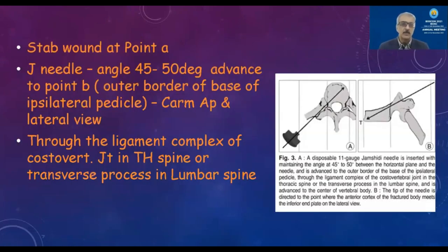Make a stab wound at point A. The cannula needle is angled at 45 to 50 degrees and advanced to point B, which is the outer border of the base of the respective pedicle on the lateral view. In the AP view, this needle will pass through the ligamentous complex of the posterior vertebral joint in the thoracic spine, or the transverse process in the lumbar spine.